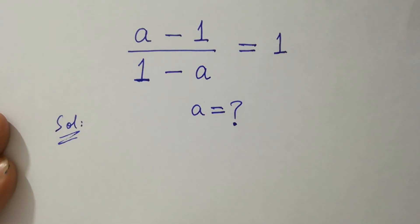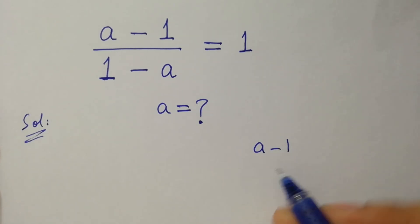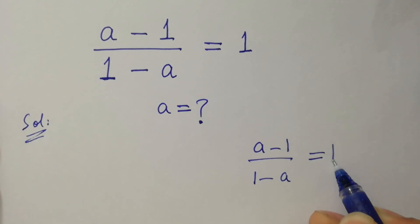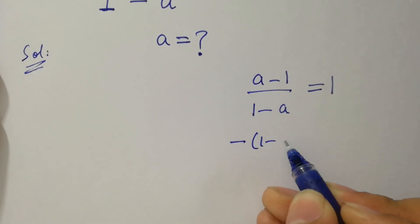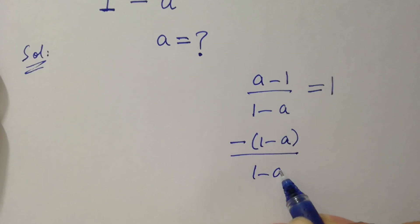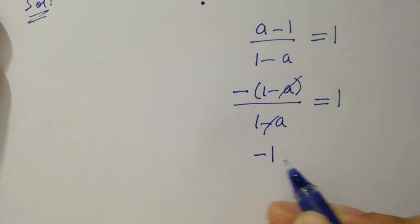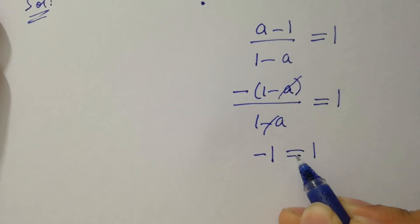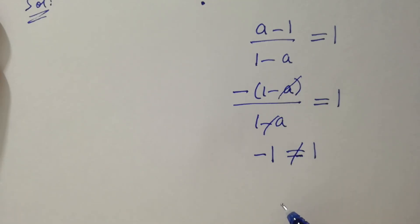If you see this problem, (a minus 1) over (1 minus a) equals 1, which is the same as minus (1 minus a) over (1 minus a) equals 1. The (1 minus a) cancels, and we have minus 1 equals 1, where minus 1 is just not equal to 1, which shows that this has no solution.